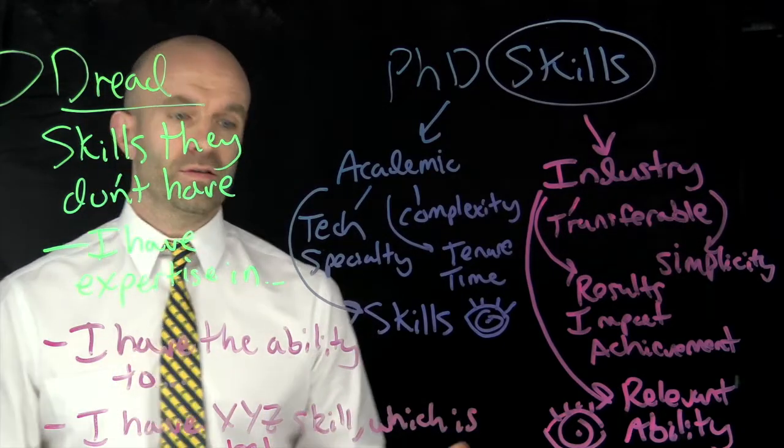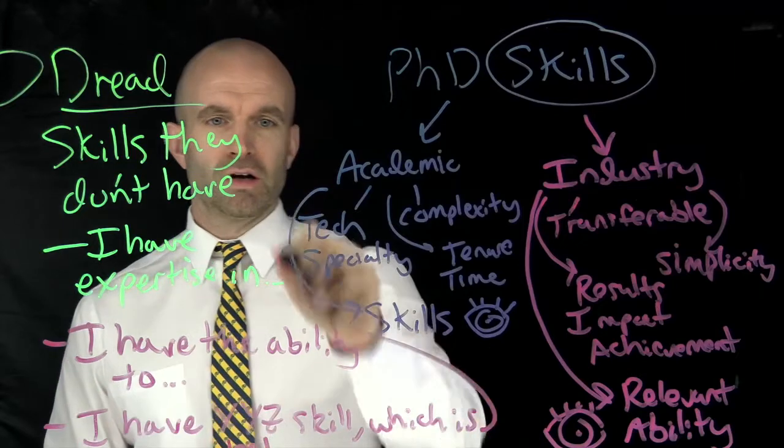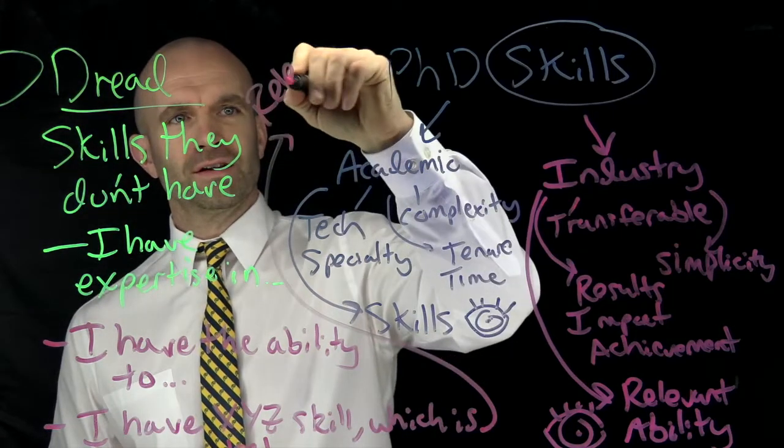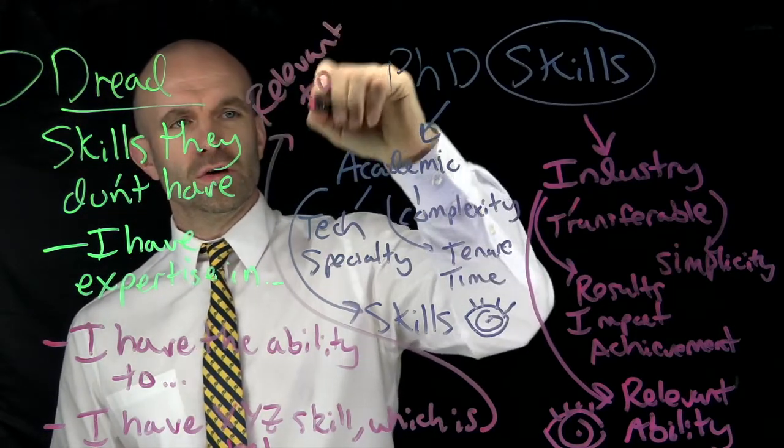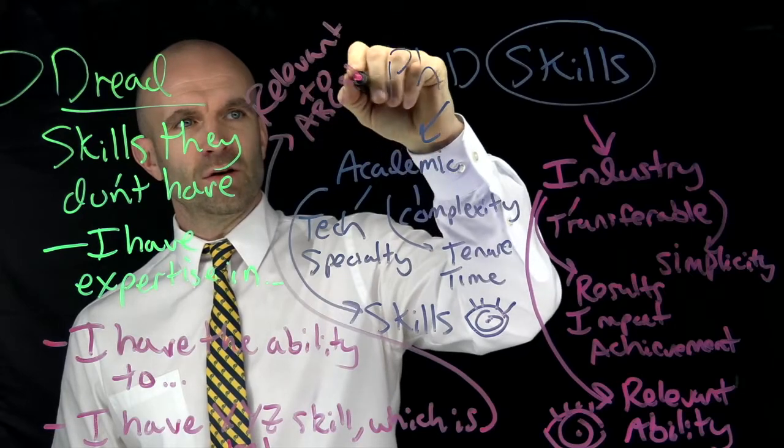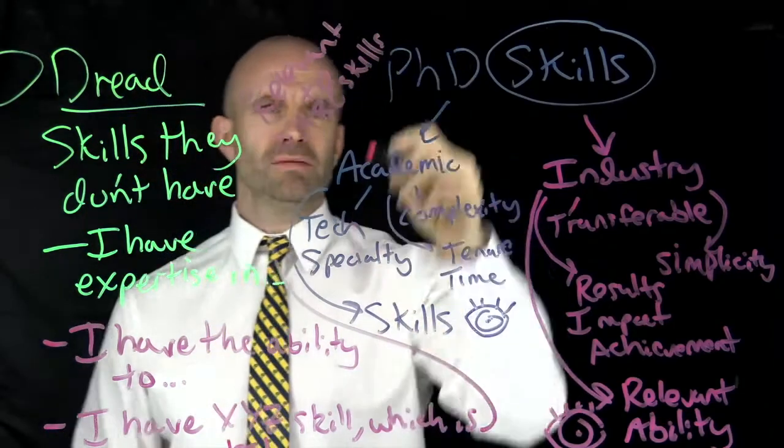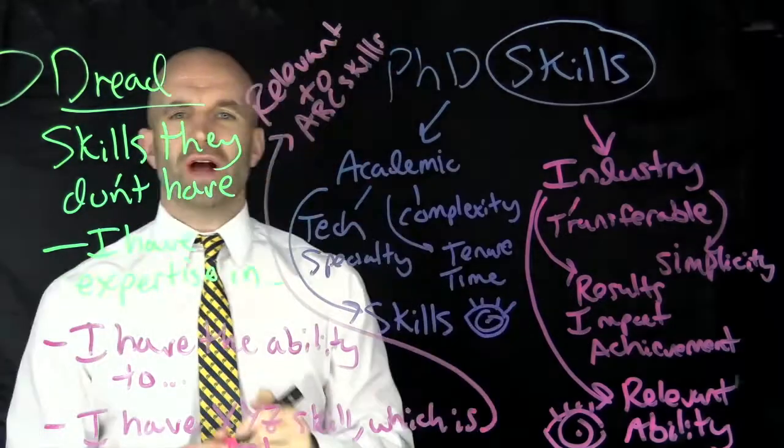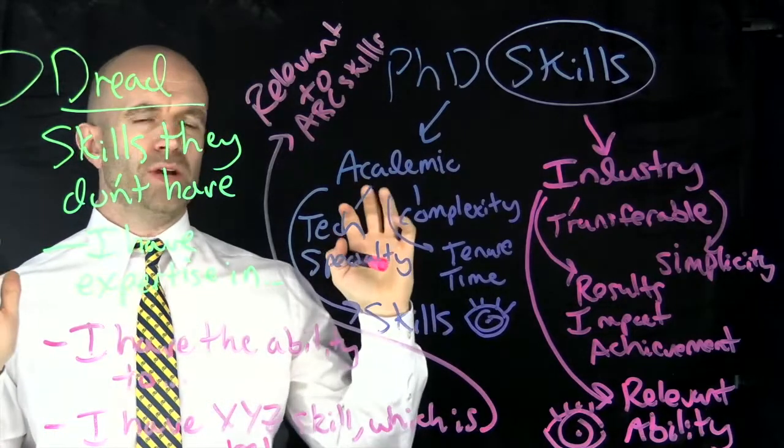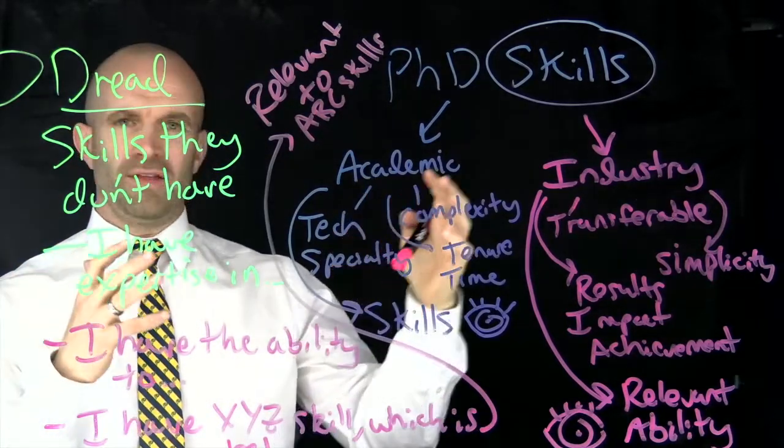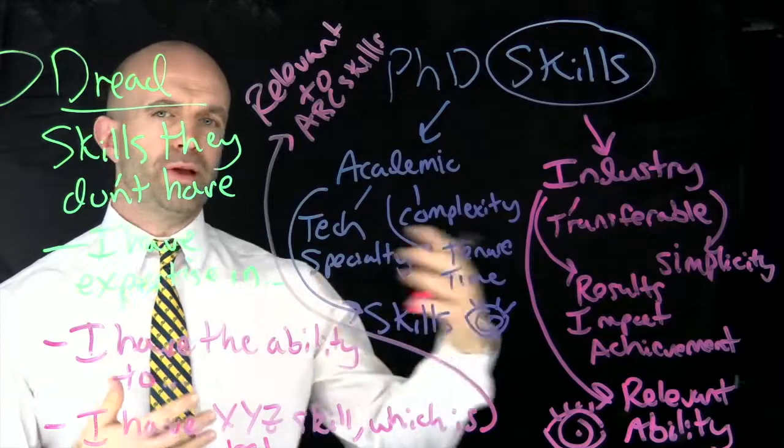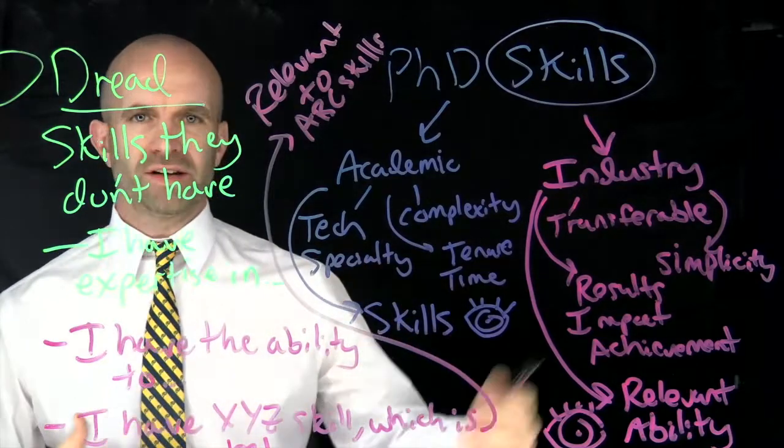It's not quite going to fit on. So I have, which is relevant to A, B, C skill, which would be the skill on the job posting. So you can talk about what's relevant. You can talk about skills that are similar. You can talk about what you have the ability to do, what you have the ability to learn.